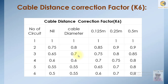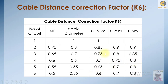Then we have the cable distance correction factor K6. This means how many number of circuits are laid in cable diameters. As the number of circuits increases in a cable, the cable will start derating, and you can see the correction factors decreasing accordingly.